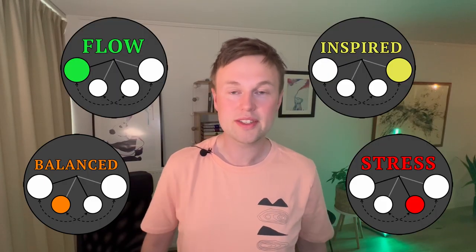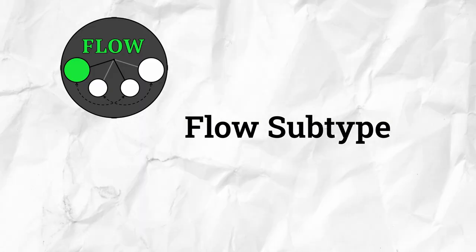The subtypes are four in number. There is a flow subtype, there is a stress subtype, there is an inspired subtype, and there is a balanced subtype. The flow subtype is the assertive subtype. Those INFJs, ENFPs, or ESTPs are the most confident. When you are feeling confident, when you are feeling assertive, when you're in the lead, you tend to take on the dominant qualities of your personality type.